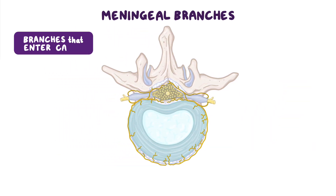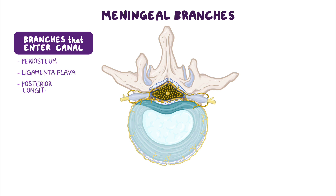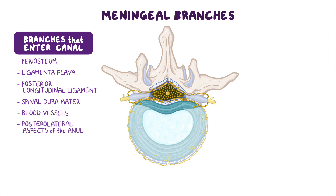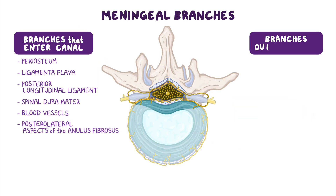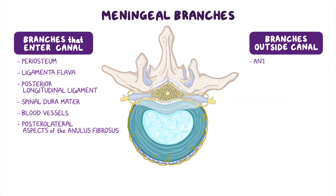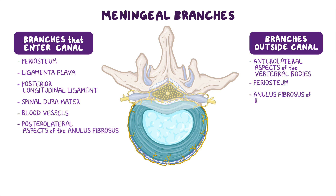Branches that enter the canal distribute fibers to the periosteum, ligamenta flava, the posterior longitudinal ligament, spinal dura mater, blood vessels, and the posterior lateral aspects of the annulus fibrosus of the intervertebral disc. Branches that remain outside the canal innervate the anterior lateral aspects of the vertebral bodies and their covering periosteum, the annulus fibrosus of the intervertebral discs, as well as the anterior longitudinal ligament.